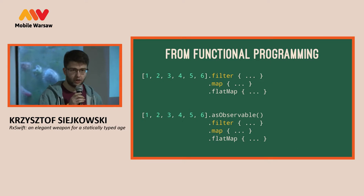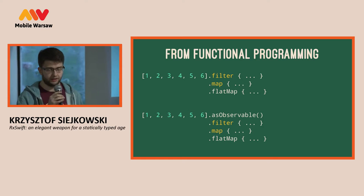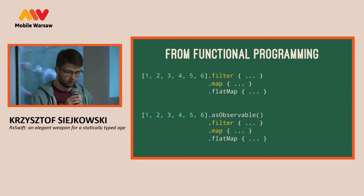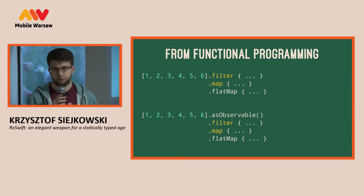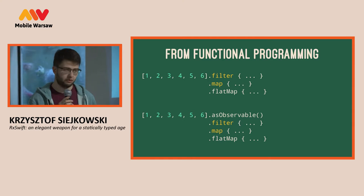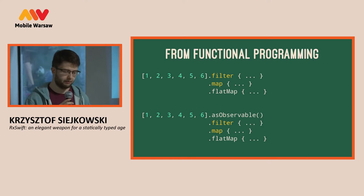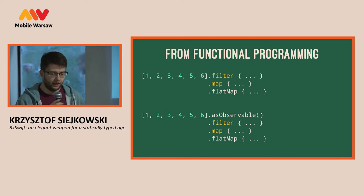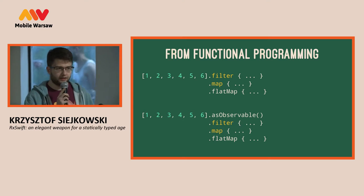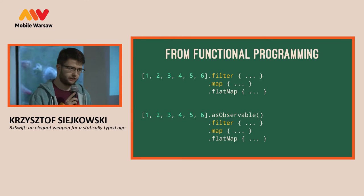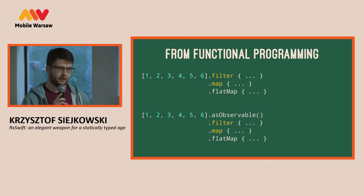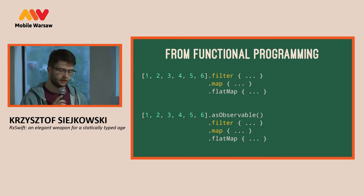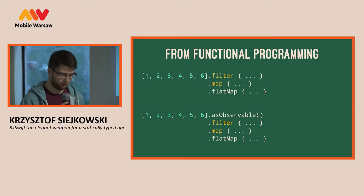From functional programming, two basic things were taken by an observable. Firstly, it provides a number of declarative methods to work with an observable, similar to those you use to work with sequences like map, reduce, and so on. And also it is designed to be easily composed — the same way as you can compose functions or sequences in functional programming terms, you can also compose observables.